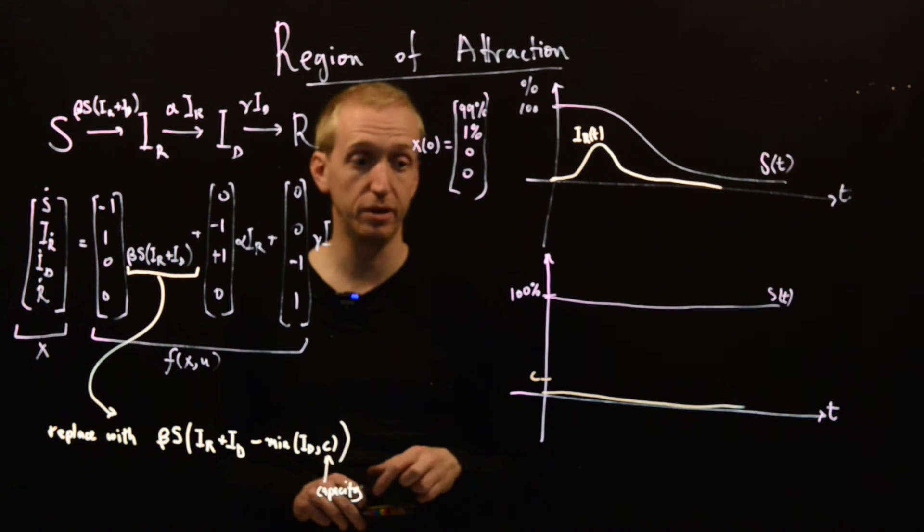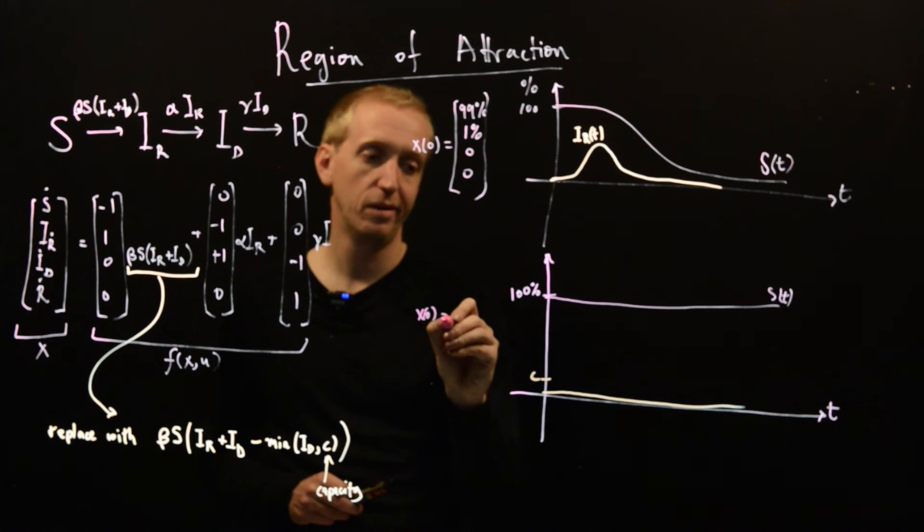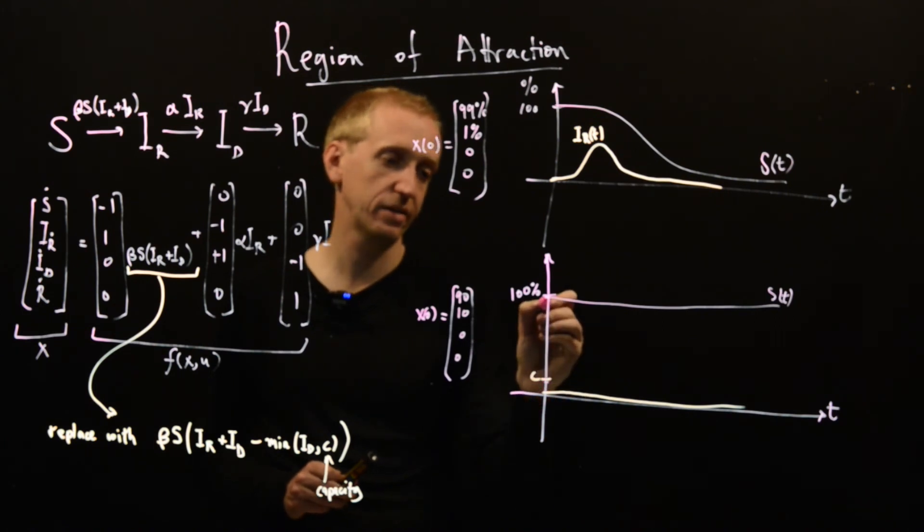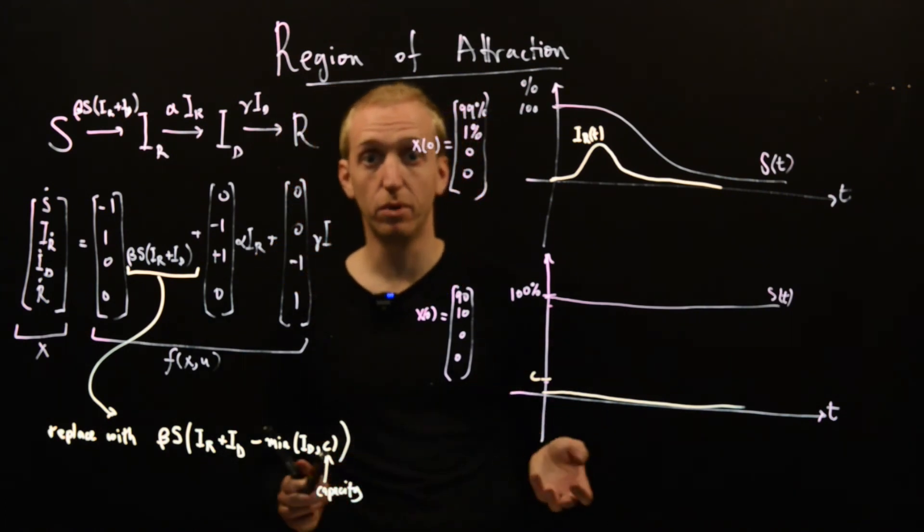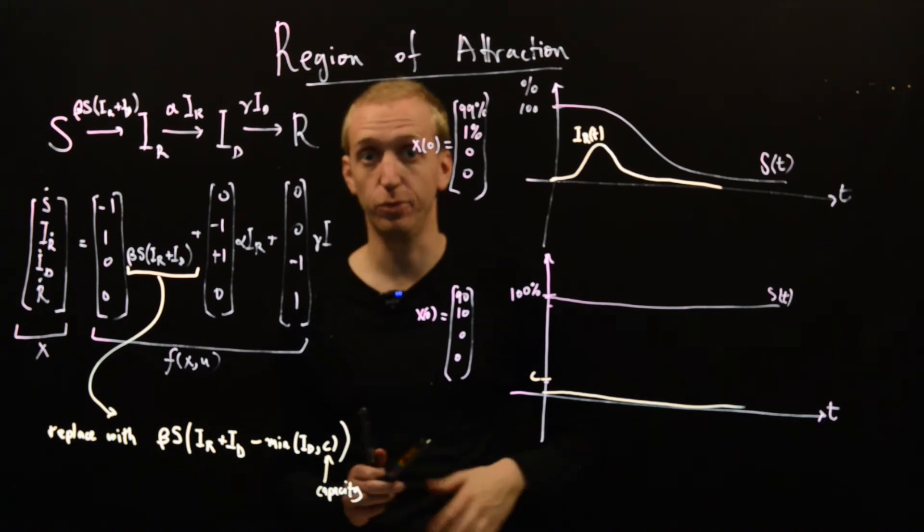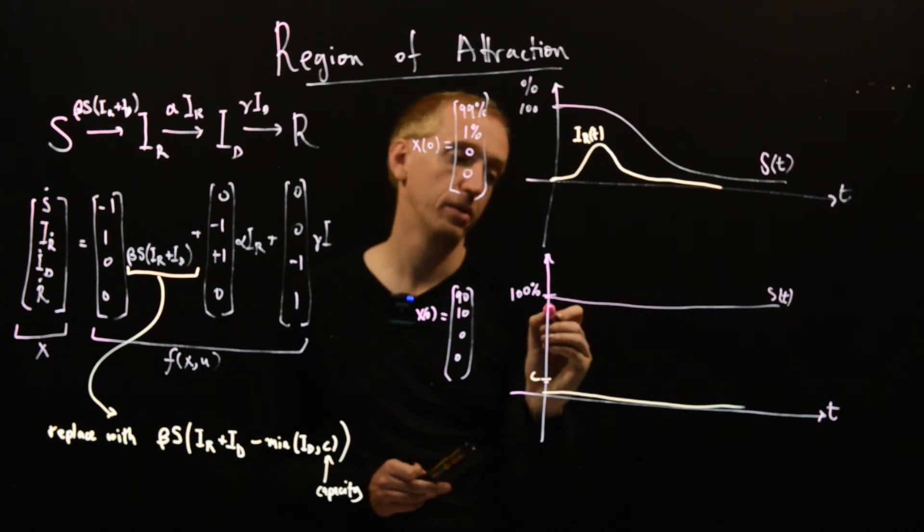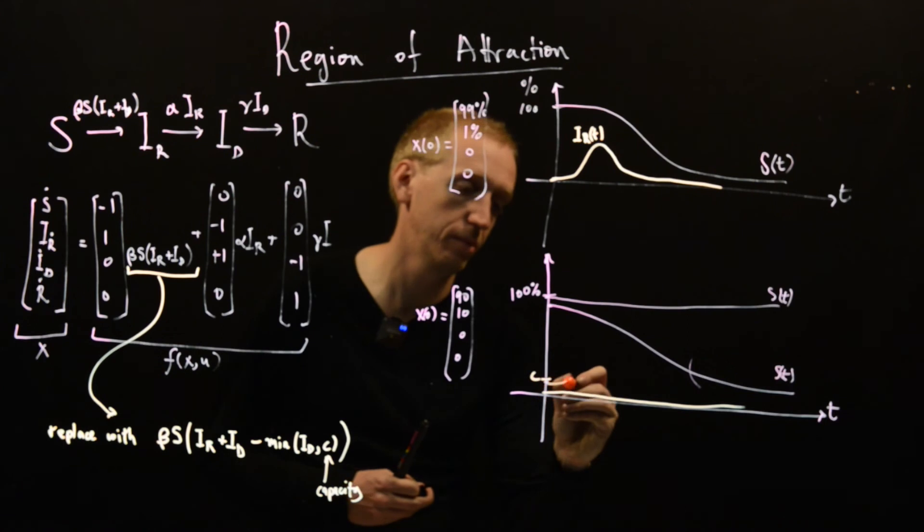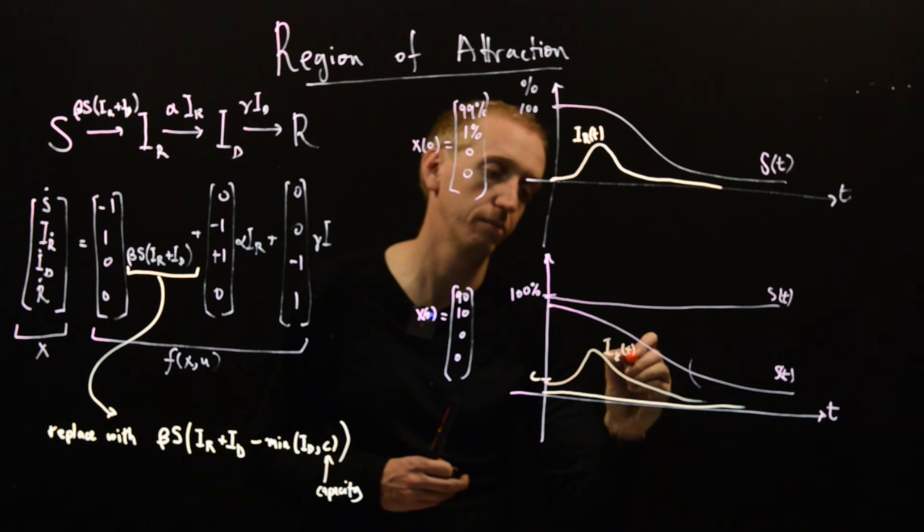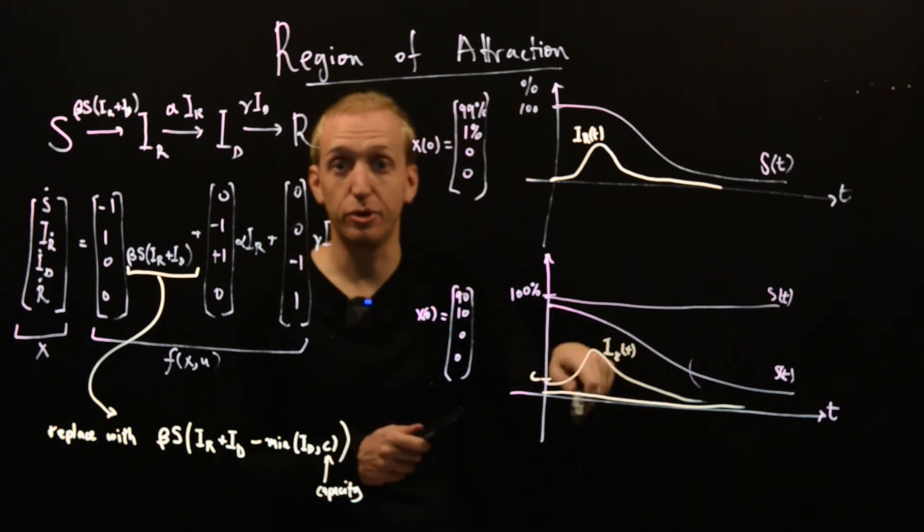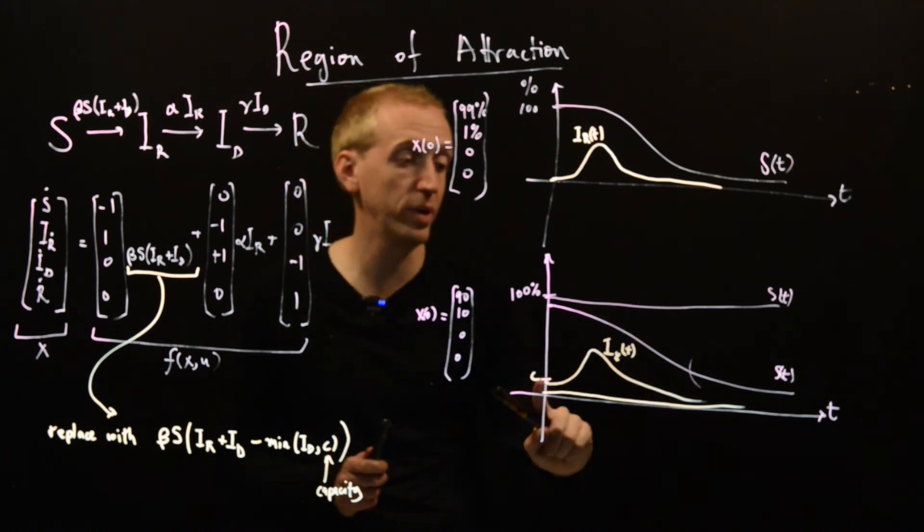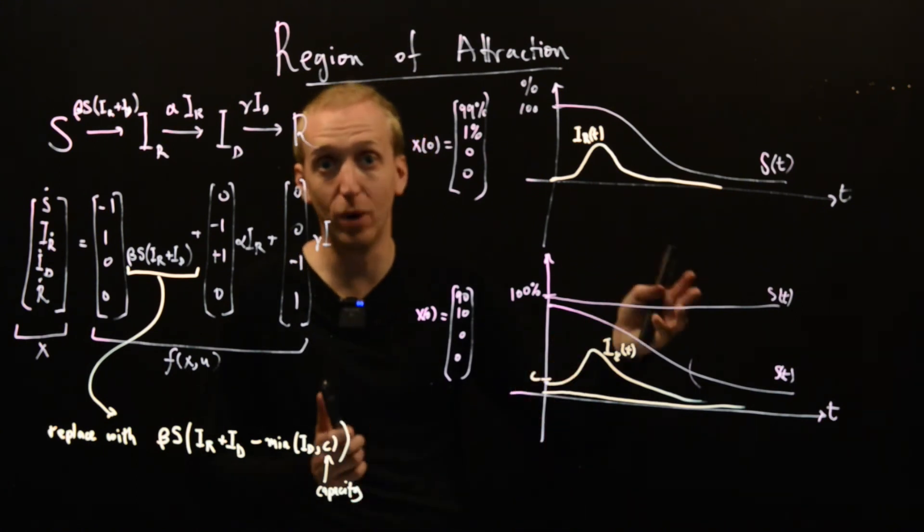But now what happens if we start with a different initial condition? So let's start with the initial condition X0 maybe equal to 90, 10, 0, 0. So we have a bigger initial outbreak. But let's say 10 is still below our capacity. Well this time things revert more or less to exactly the open loop behavior, so the behavior without test and trace. So this time S of t, lots and lots of people end up catching the disease. And we get the same characteristic lump in our IR curve. And this is illustrating exactly this region of attraction behavior. Just by scaling the initial condition we get completely different behaviors. And before we had something that was very stable and very nice and working very well, but it got overwhelmed.